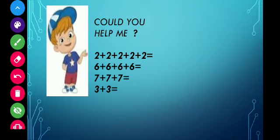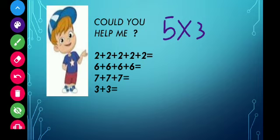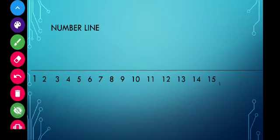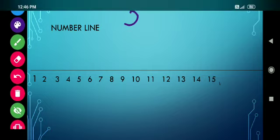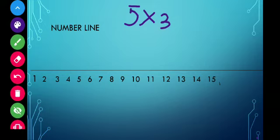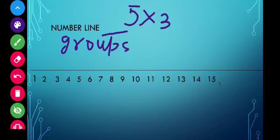One more thing I would like to tell you. If you have a question like five multiplied by three and you are confused about finding the answer, we can use a number line. For five multiplied by three, the first number — five — is the number of groups, and three is the number of objects in each group.